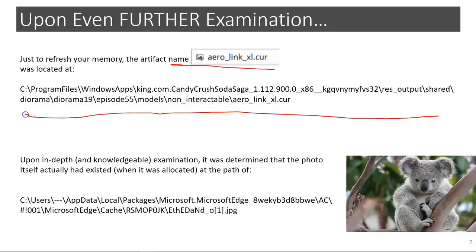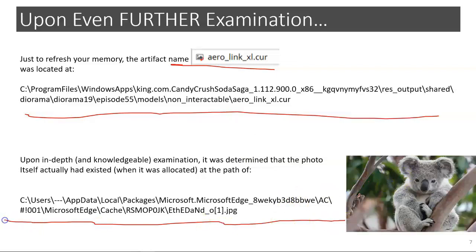This is what law enforcement said the file was, but it wasn't. Under further examination, this was actually a webcash file. Then why are they calling it a cursor file? Well, because they've examined it wrong. Because they've come to the wrong conclusion. And hey, let's not let the facts get in the way of a good solid conviction.